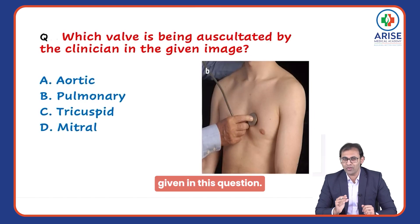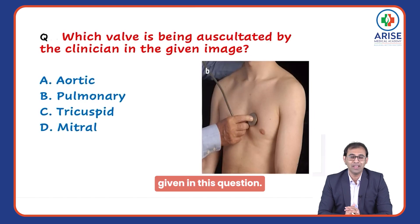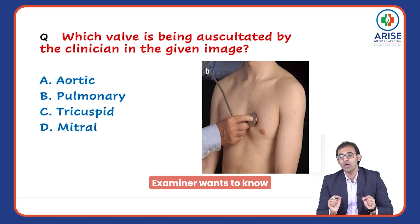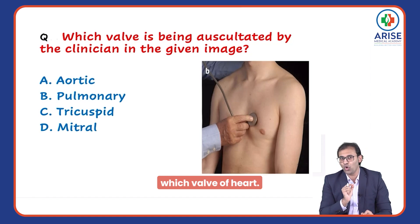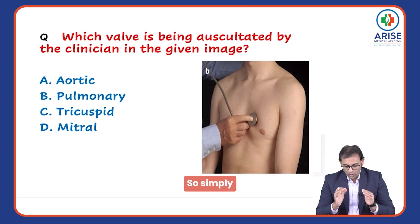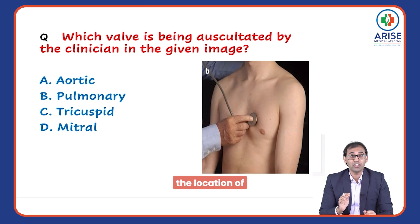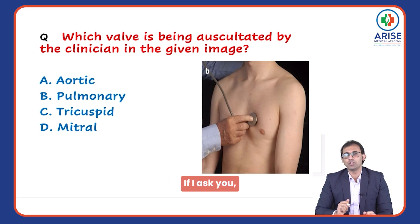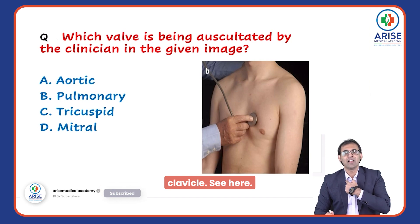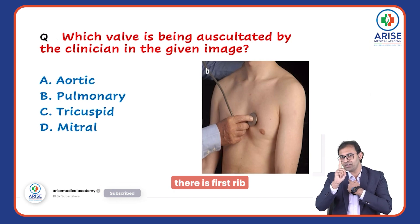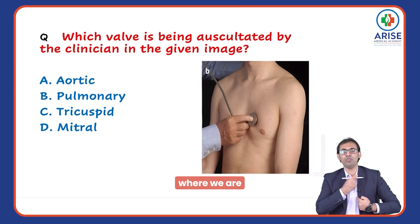As per the scenario given in this question, the examiner wants to know which valve of the heart the clinician is auscultating. To solve this question, we should know the location of the valves. If I ask you, please touch your right clavicle — just behind your right clavicle there is the first rib.